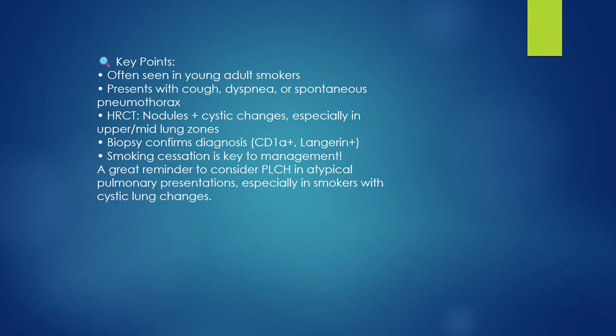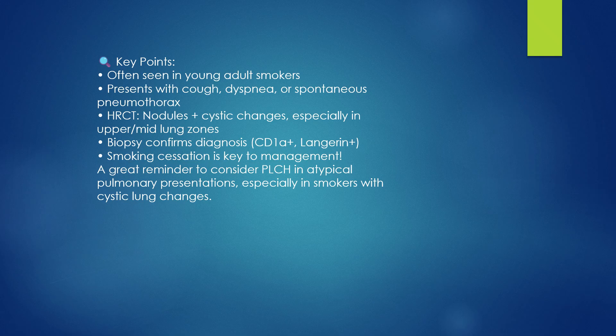To summarize the key points: pulmonary Langerhans cell histiocytosis is seen in young adult smokers, presents with cough, dyspnea, or spontaneous pneumothorax. On HRCT, it shows nodules plus cystic changes, especially confined to upper and mid zones of the lung. Biopsy confirms the diagnosis with positivity for CD1a and Langerin. Smoking cessation is key to management, and PLCH should be considered in atypical pulmonary presentations like recurrent pneumothorax, especially in smokers with cystic lung changes.